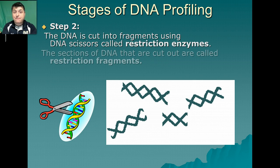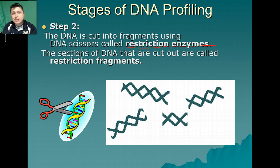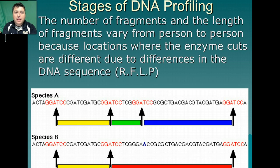Once we have enough DNA to work with, we're going to cut it into small pieces called restriction fragments using special DNA scissors called restriction enzymes. These restriction enzymes are like DNA scissors, used for cutting the DNA into small pieces. The number of fragments we get from different people will be different because each person's DNA sequence is different. The enzyme cuts wherever it finds its specific cutting sequence.